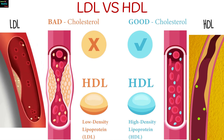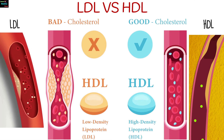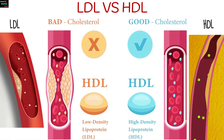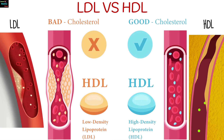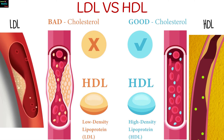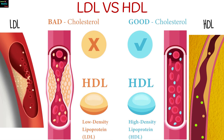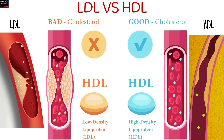Low-density lipoprotein and high-density lipoprotein are two types of cholesterol in the blood. They differ in their compositions and roles in the body.